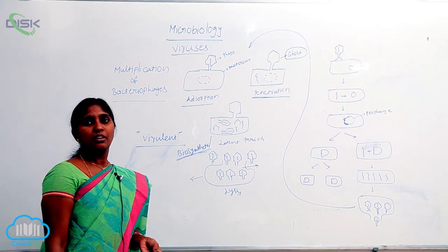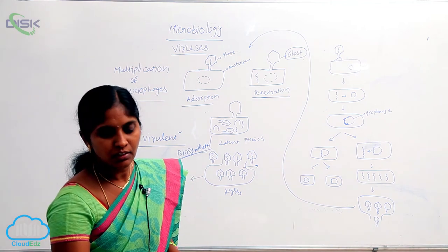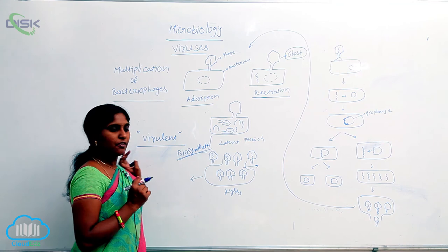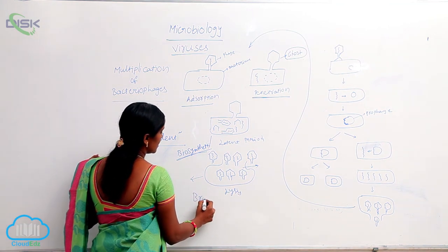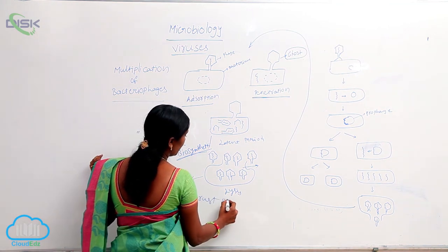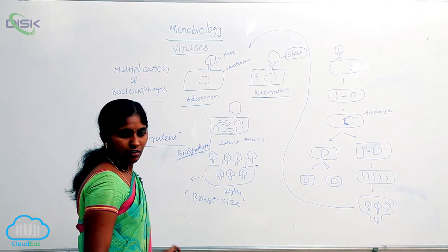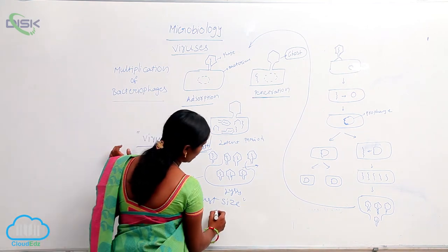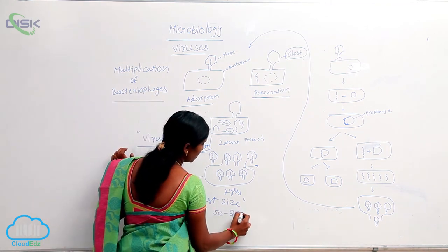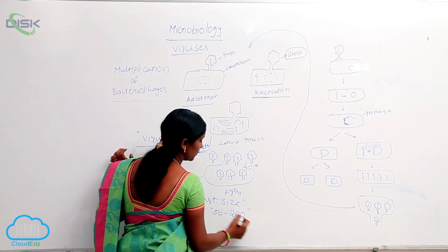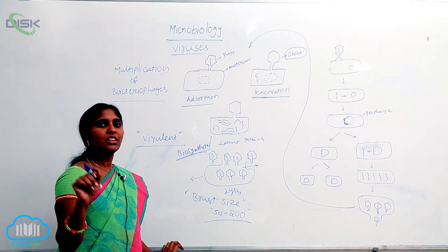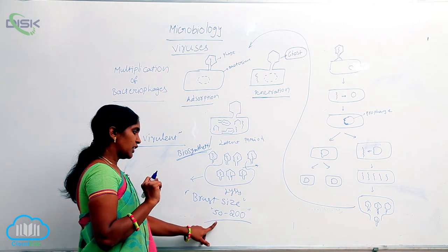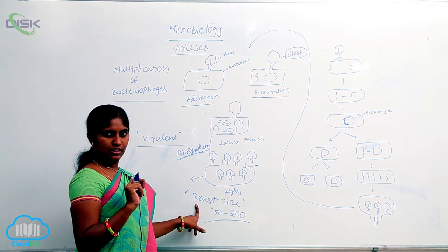These are virulent phages. The number of progeny released is expressed in the form of burst size — approximately 50 to 200 bacteriophages are released within one lytic cycle. The number is stated in the form of burst size.